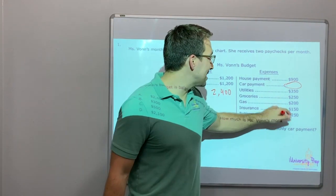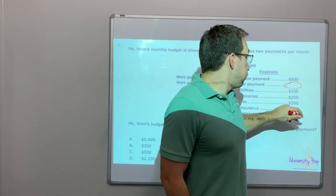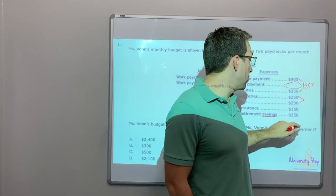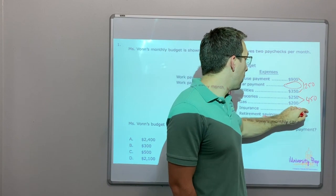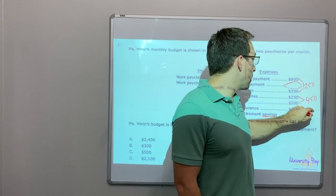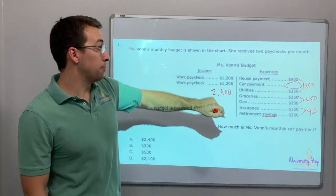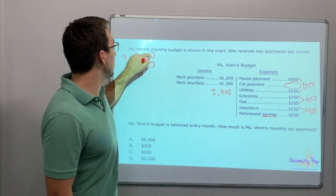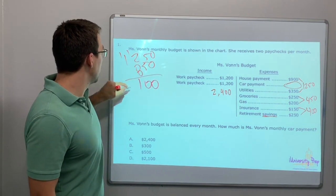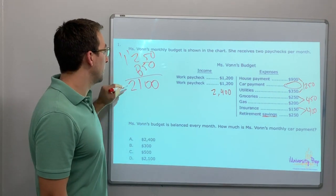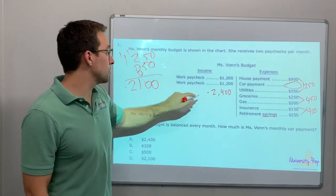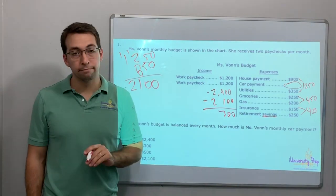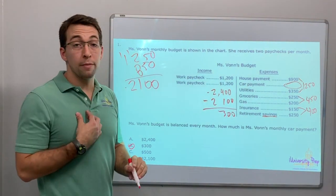Let's add the known expenses together: 900 plus 350 is $1,250. 250 plus 200 is $450. 150 plus 250 is $400. Now add those together: 450 plus 400 is $850, plus 1,250 is $2,100. So what's $2,400 minus $2,100? The car payment is $300. Answer: B. There's a lot of math here — multiple steps.